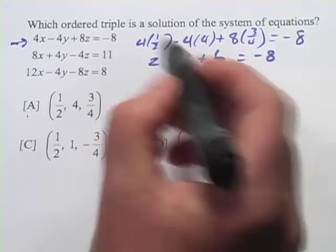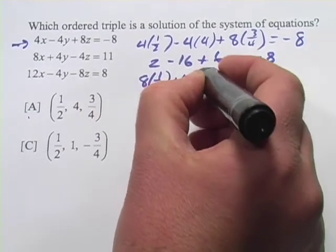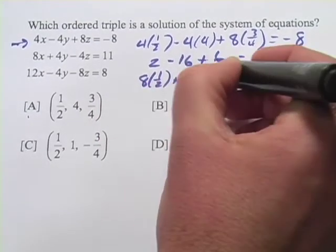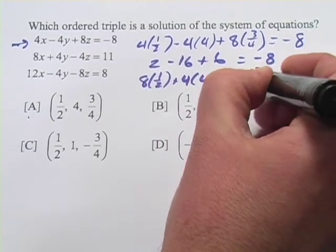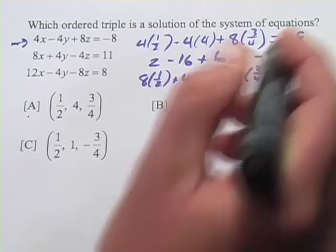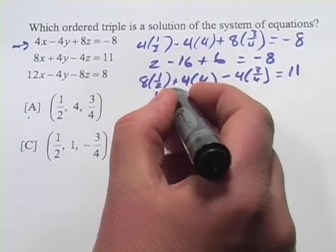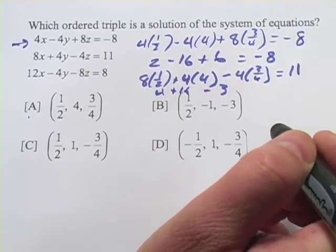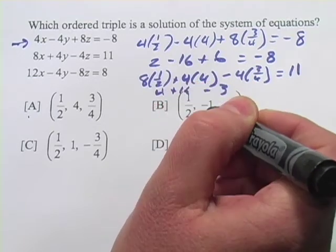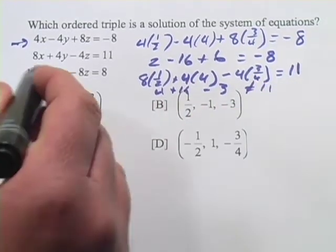So 8 times 1/2, plus 4 times 4, minus 4 times 3/4 equals 11. Let's see if this one works out. We've got 4 plus 16, minus 3, and that one is not going to work out. 4 plus 16 is 20, minus 3 would be 17. That does not equal 11. So A is out.